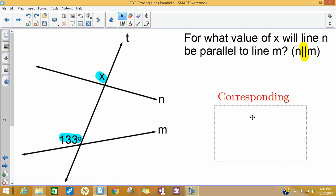Since they're corresponding, if the value of x was 133, then line n and m would end up being parallel. They don't look parallel in this picture, but if we created x to be 133, then these two lines n and m would be parallel.